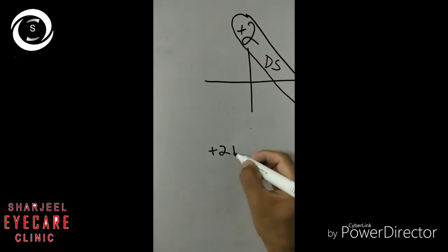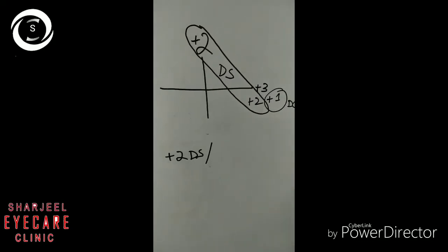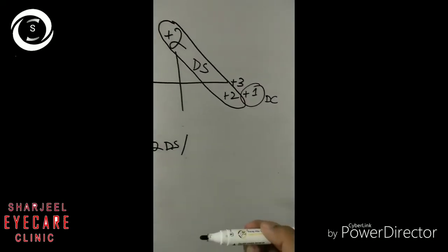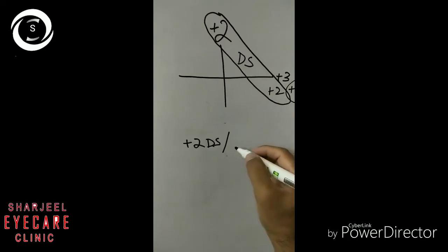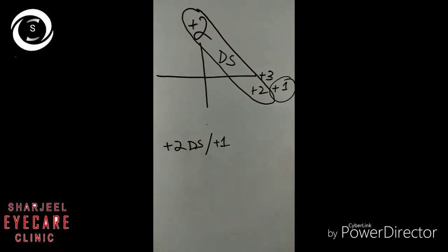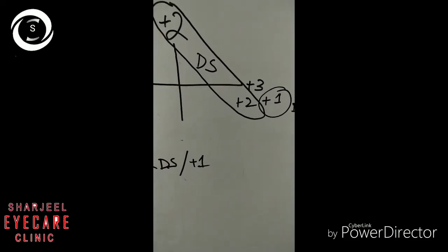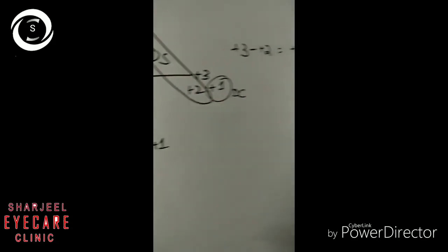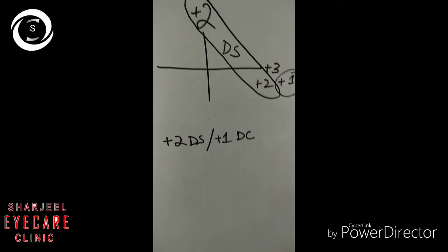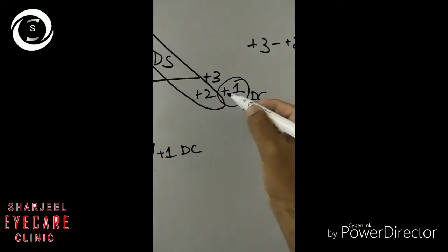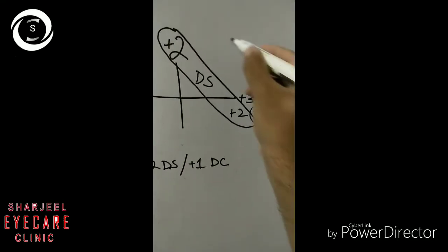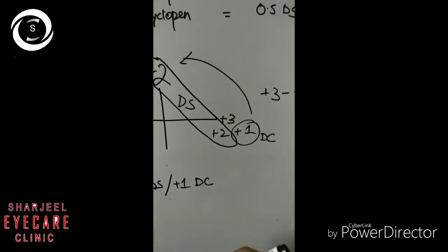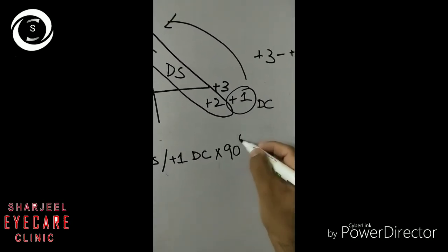Now you can see plus 1 is left. That plus 1 is present at the horizontal meridian, and the power will act perpendicularly to it. So we can write plus 2 diopter sphere and the cylinder is plus 1 diopter cylinder at 90 degrees. Because plus 1 is left at the horizontal meridian, and as it acts perpendicularly, it will be shown at 90.